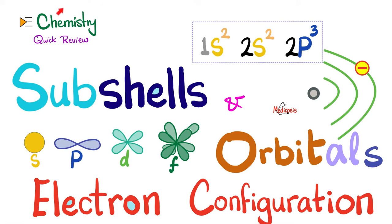If you're struggling with chemistry, this playlist is for you. It's Medicosis Perfectionalis and the playlist is called Chemistry Quick Review. In previous videos, we talked about the periodic table of the elements and the shells of the electrons. Today, we'll talk about the sub-shells and the orbitals, as well as electron configuration.